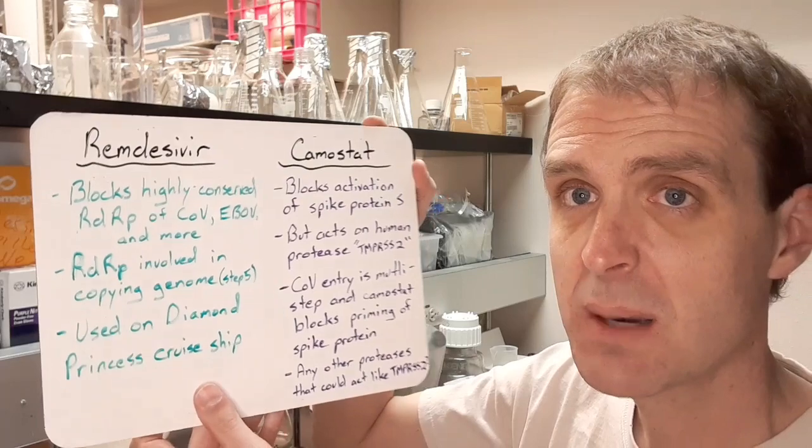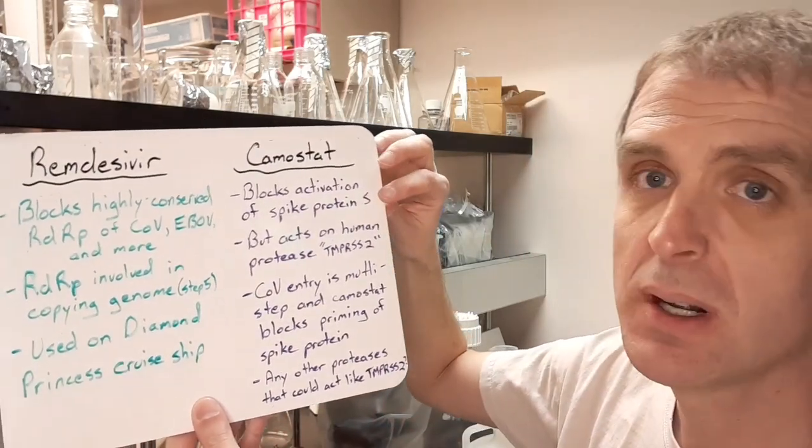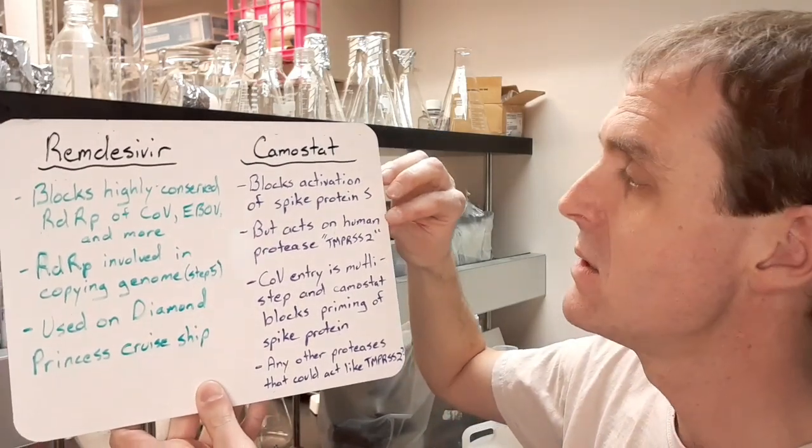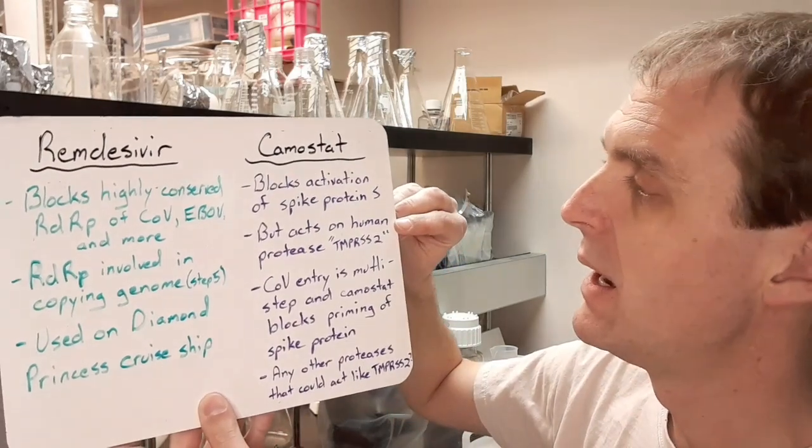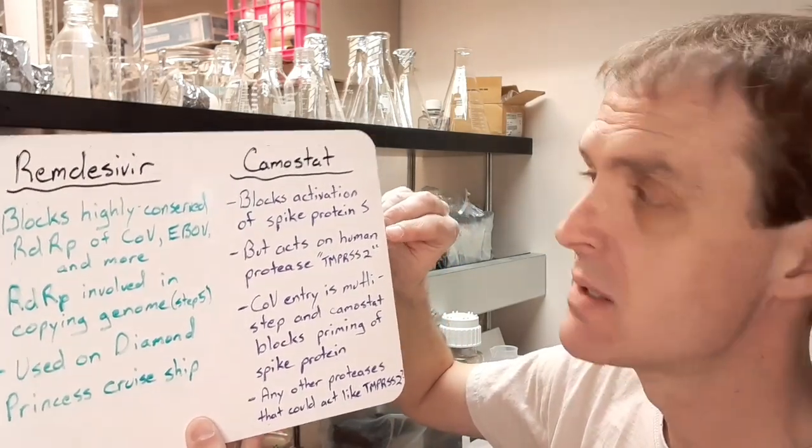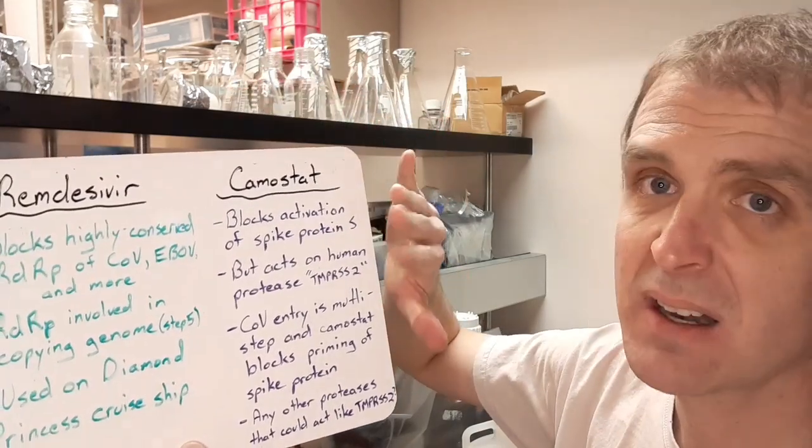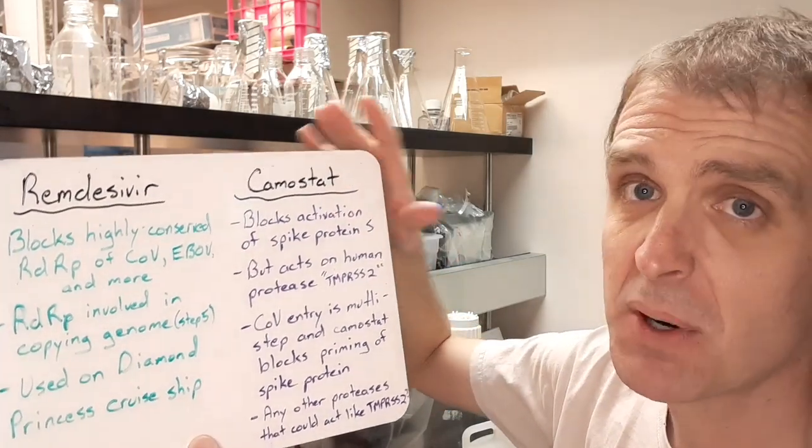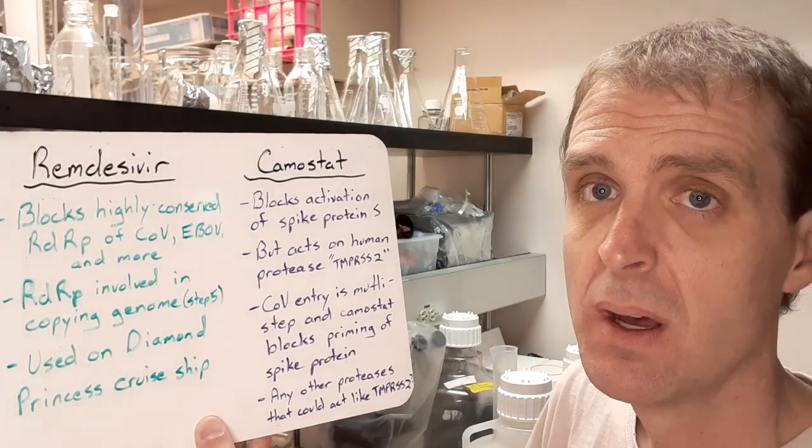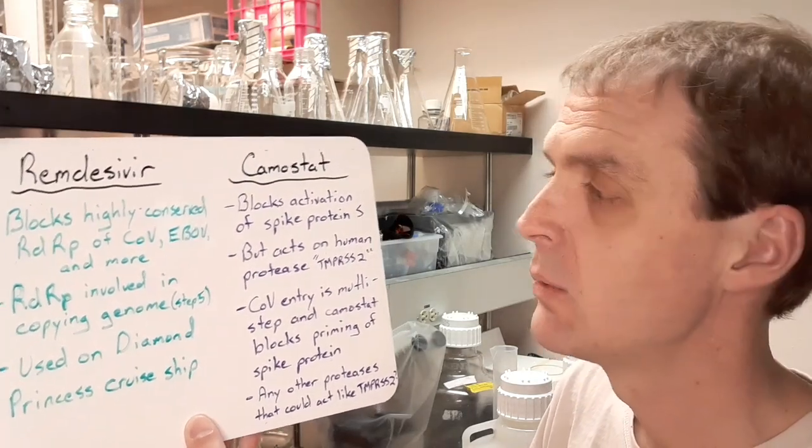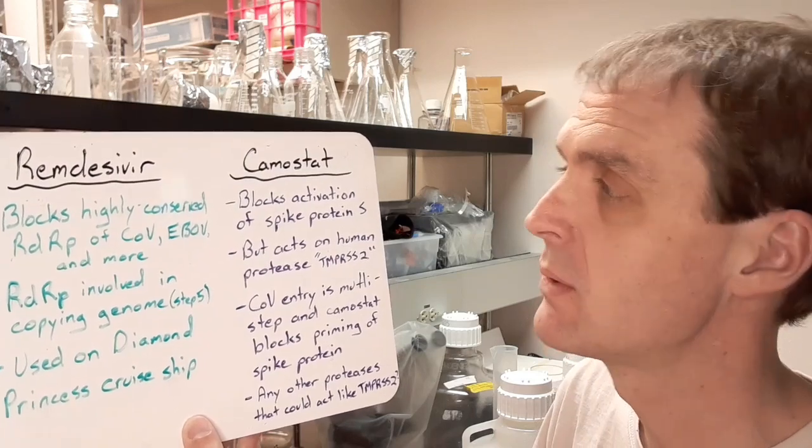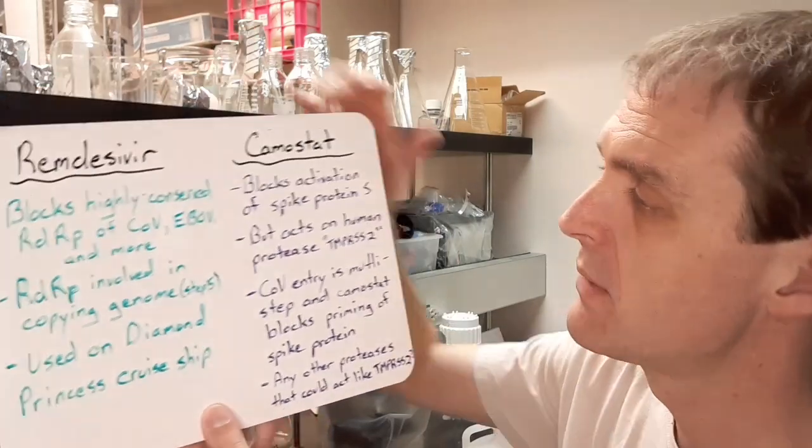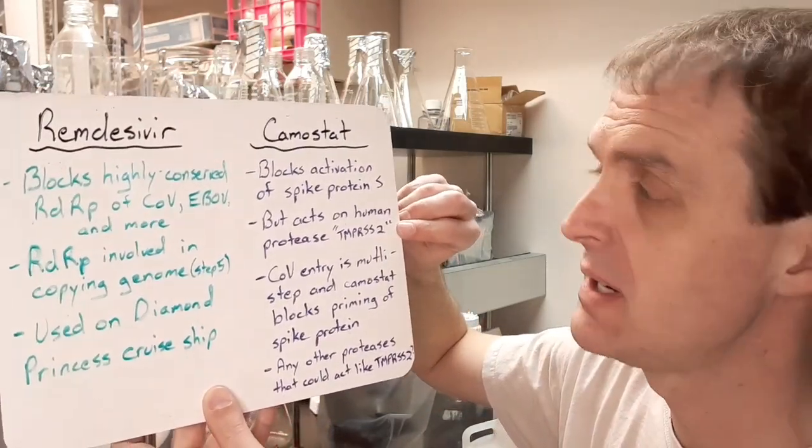The video here that we talked about was camostat. It blocks the activation of the spike protein. So the spike protein needs to be cleaved from S to S1 and S2. It acts on a human protease. So this drug doesn't act on the virus itself. It acts on human proteins, which is good because the spike proteins of different coronaviruses, they vary in amino acid identity, which means if you line them up and compare their sequence, their sequence identity is fairly low. It's not like the RNA-dependent polymerase where it was highly conserved. So it's good that it acts on a human protein instead.